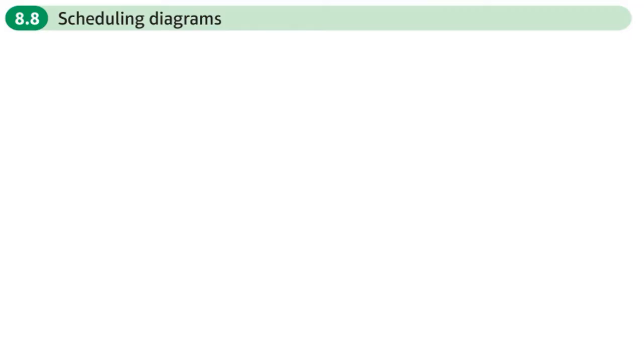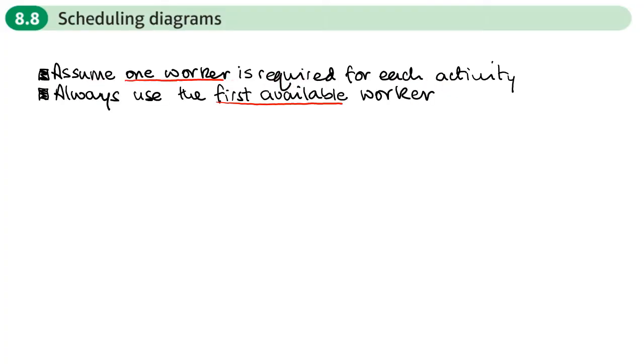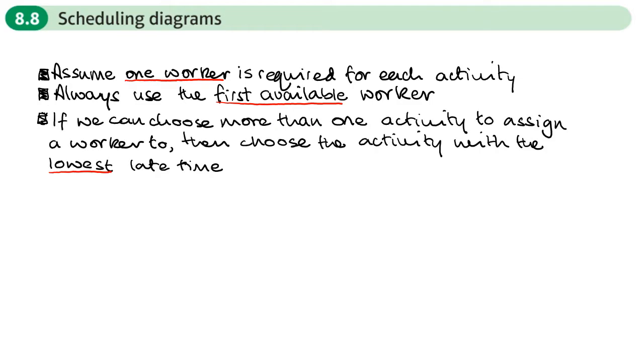When we draw a scheduling diagram, we are assigning workers to activities. We're going to assume that one worker is required for each activity. We're always going to use the first available worker. If we can choose more than one activity to assign a worker to, then we're going to choose the activity with the lowest late time.